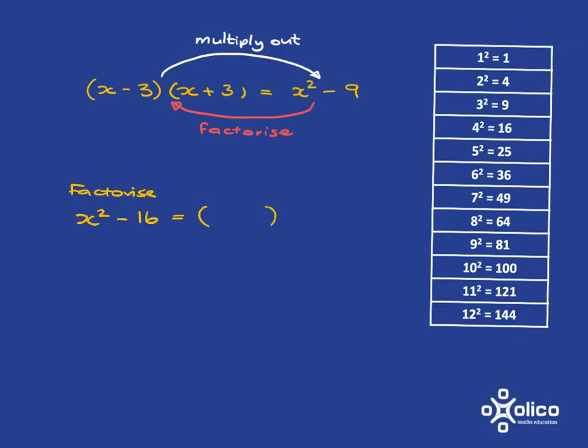Then what I'd be asking is for you to get it in the form x minus something, x plus something. What is that something going to be? Well, we know that when we multiply out, it would be this times this must give you 16 and it must be the same thing. And so we know what times what gives you 16. It's the square root of 16, which is 4.